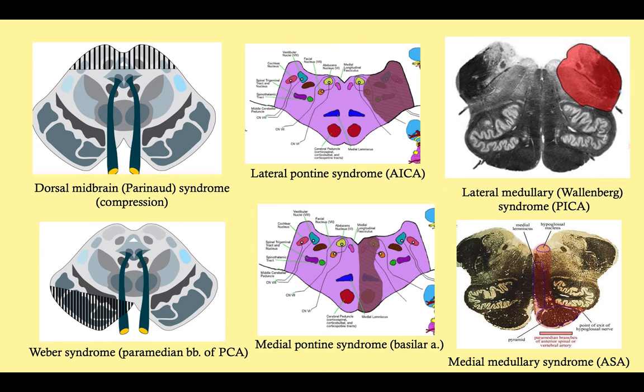When you look at the brainstem and do the neuroanatomy, it's really complicated because there are three parts — midbrain, pons, and medulla — and they don't look very similar. They are all supplied by different vessels, all coming off the posterior circulation of the circle of Willis, and you'll want to make sure you know that cold, because if you don't you'll get into a lot of trouble on Step 1, 2, and 3.